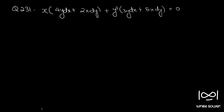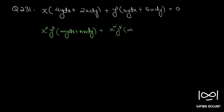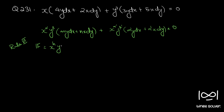The given differential equation is in the form x^α · y^β · (my dx + nx dy) plus x^α' · y^β' · (m' y dx + n' x dy) equal to 0. For such questions, we can apply Rule 6 to find the integrating factor, which will be of the form x^h · y^k.